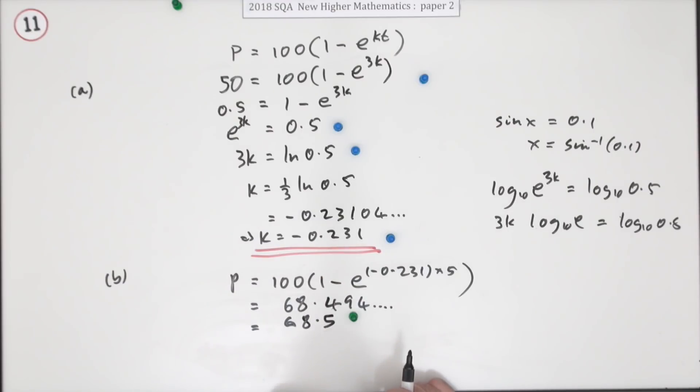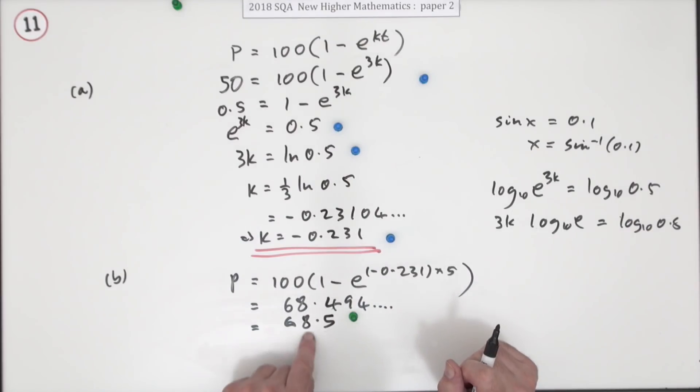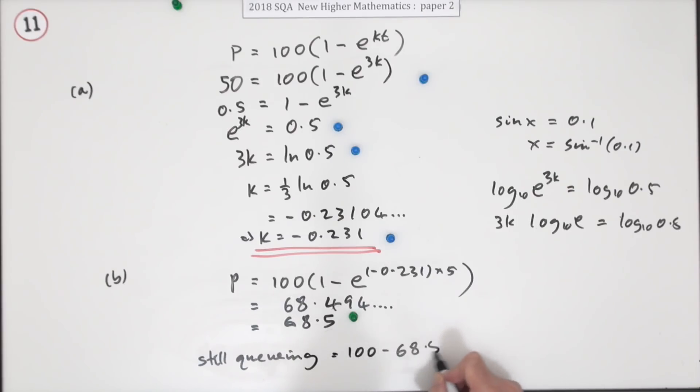Now that's worth a mark, obviously for putting that in, but that's not the answer. t stands for those that wait less than t minutes. So 68.5 percent wait for less than five, which means that those waiting for five or more will be the balance still queuing, will be 100 minus 68.5, which will be 31.5 percent for the last mark.